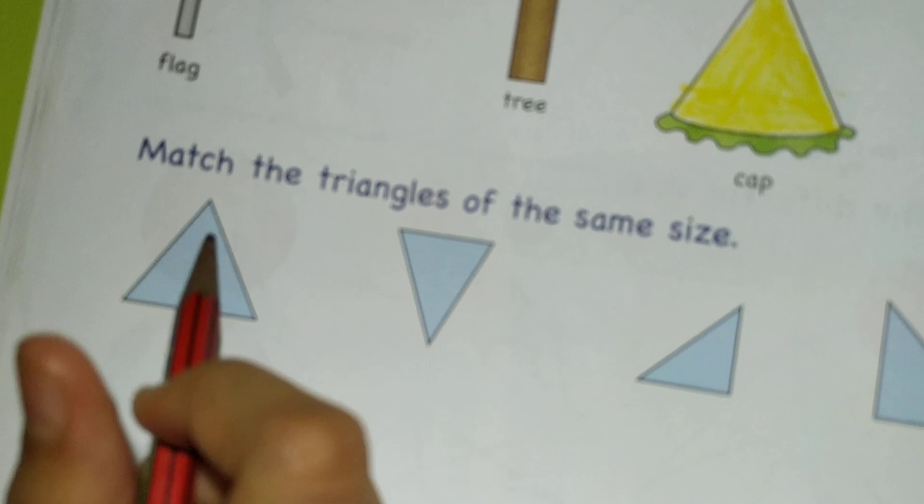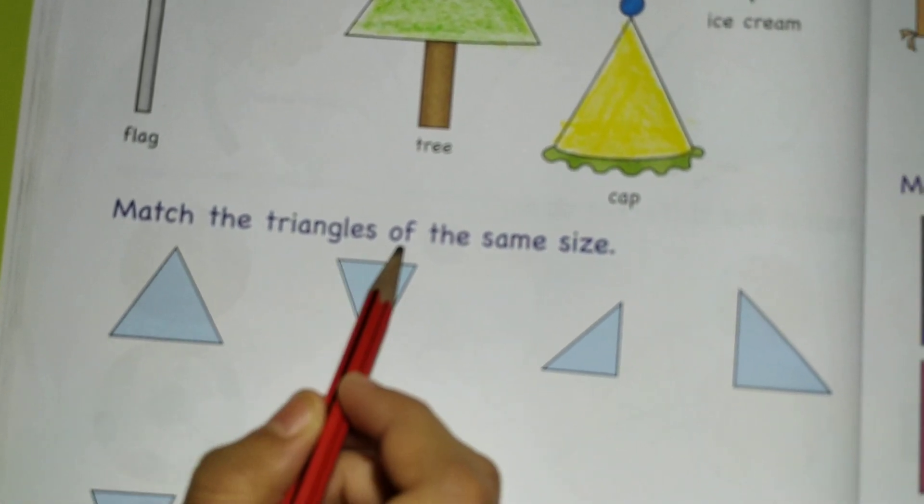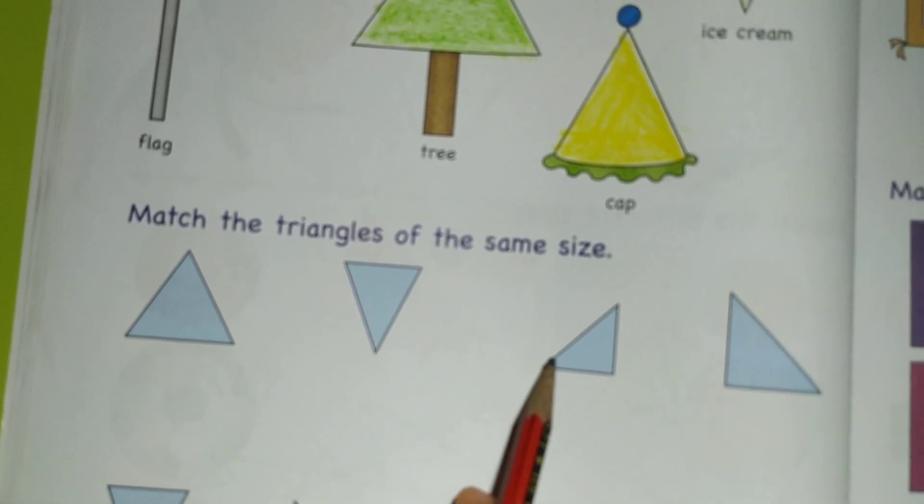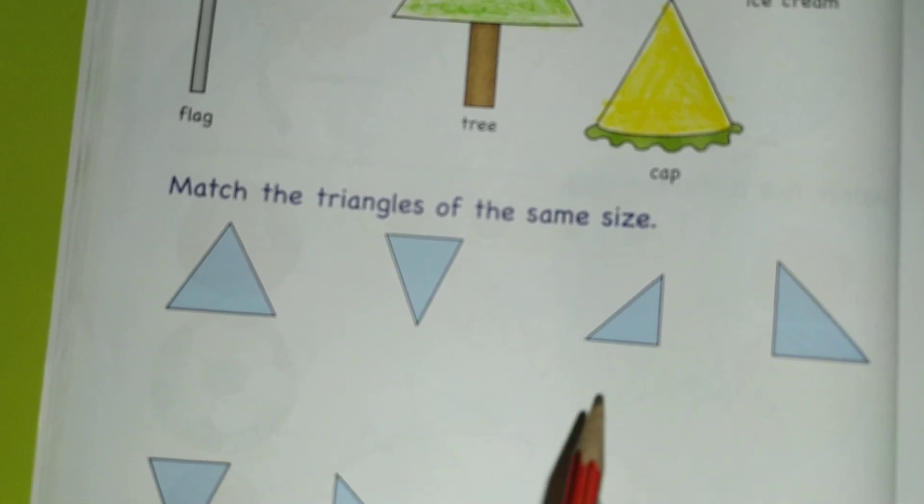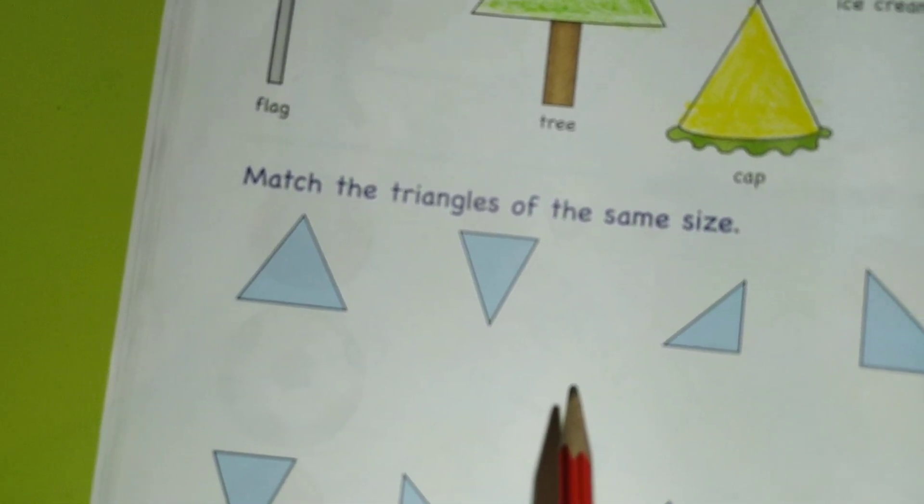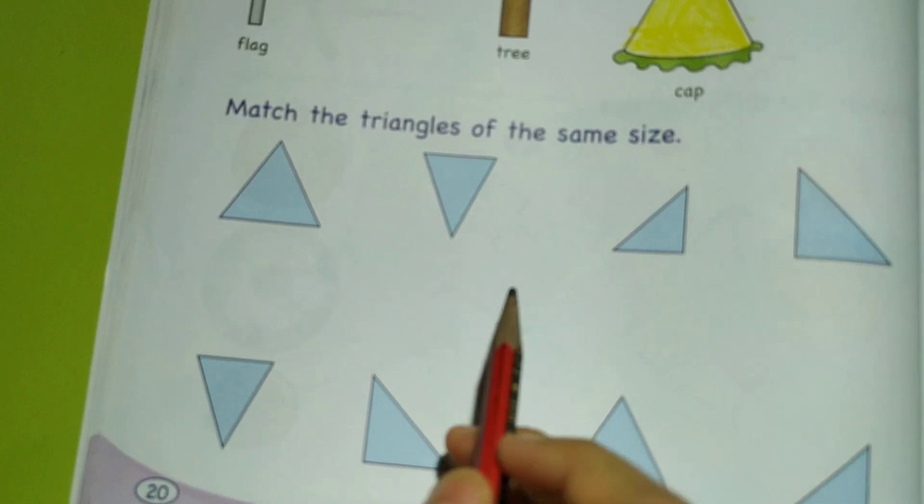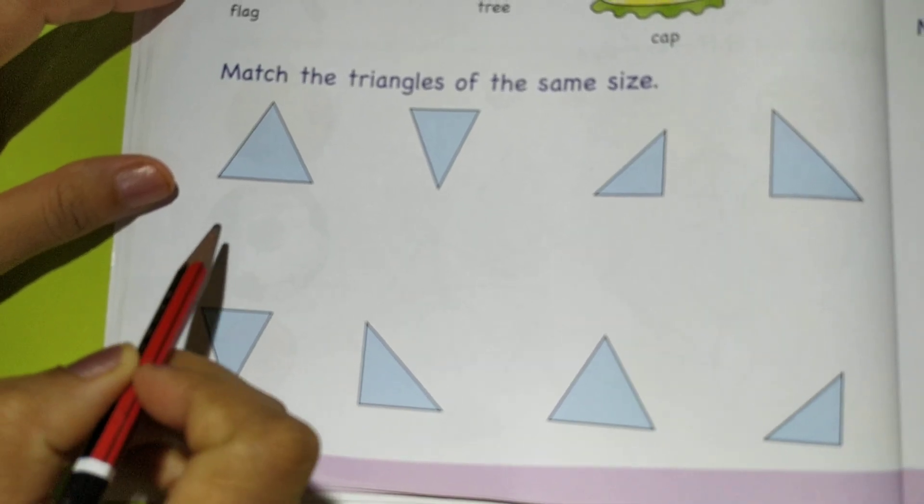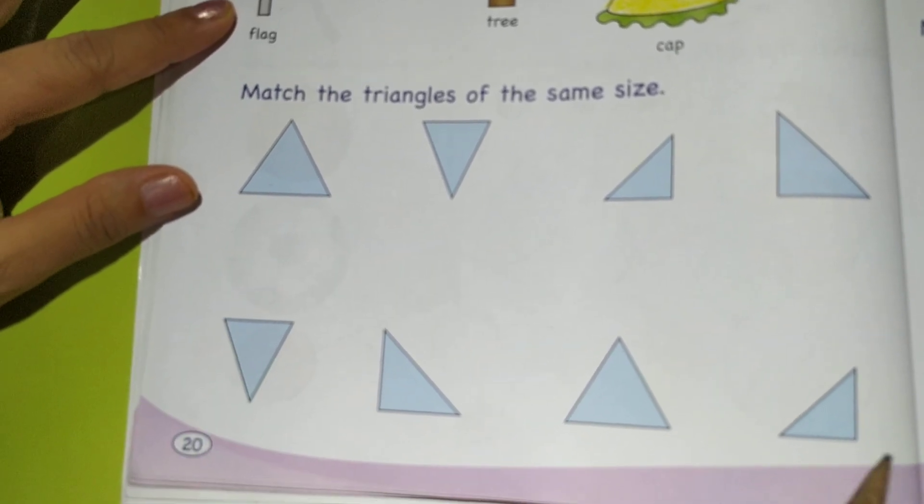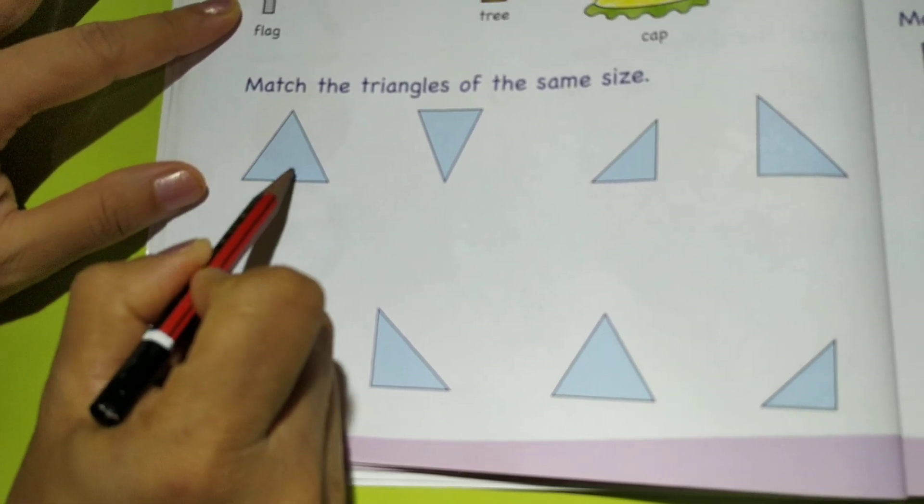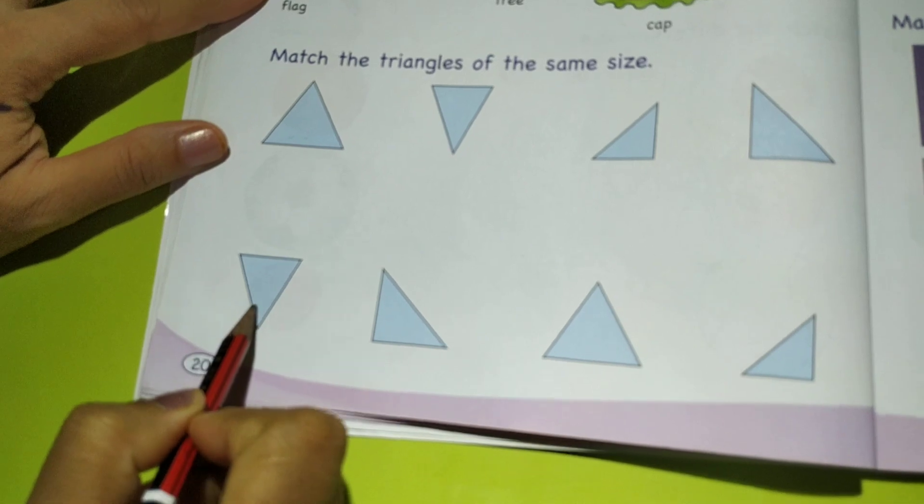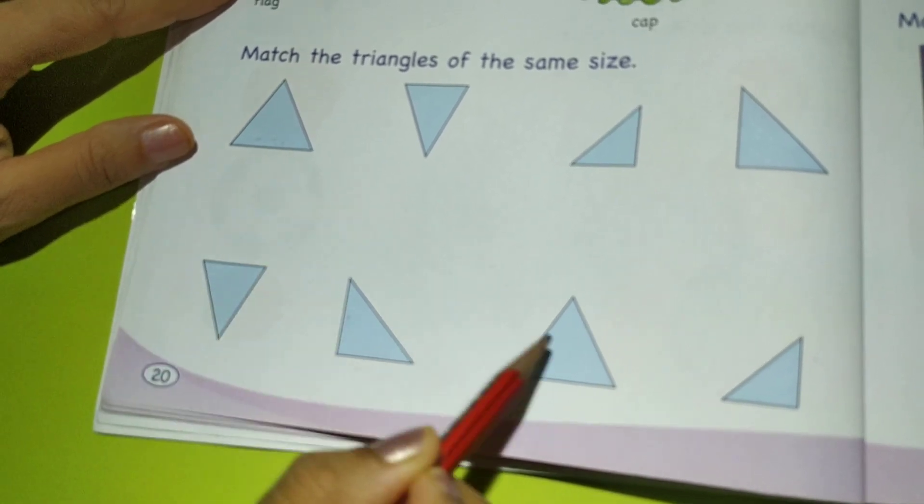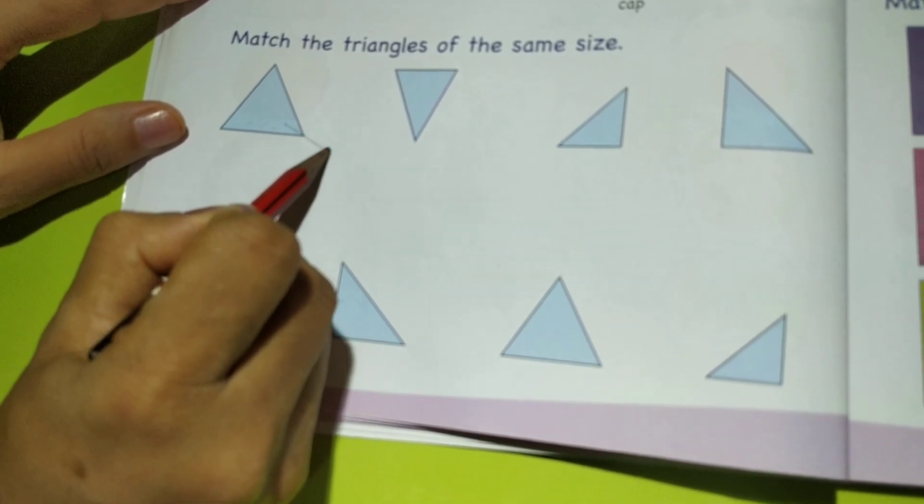Next is match the triangles of the same size. Now look at the triangles on top. All these have got different sizes, but the shape is triangle. Now we are going to match it with the shapes that are below. You have to match these triangles. Now the first one goes with—it looks the same—this will go with the third one. So I will draw a line.